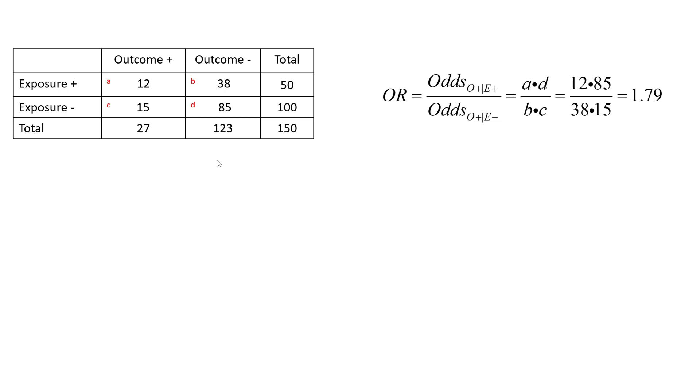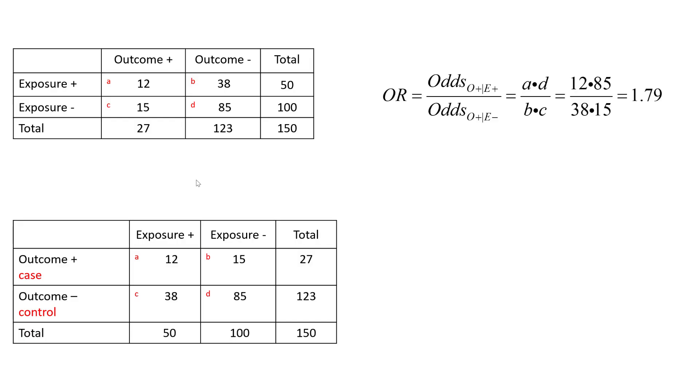But remember, in a case control study, what we really have are the odds of exposure given outcome. So we've taken the same example and set up the two-by-two table differently. Here we have the outcome in the rows and the exposure in the columns.